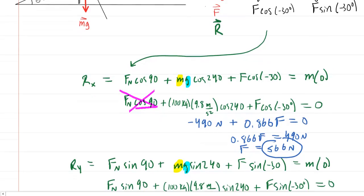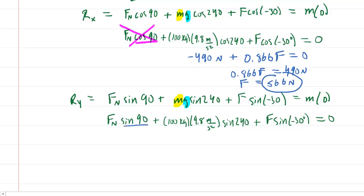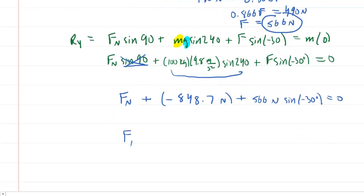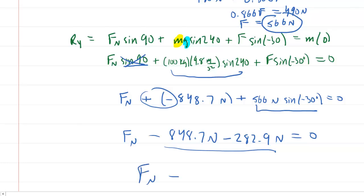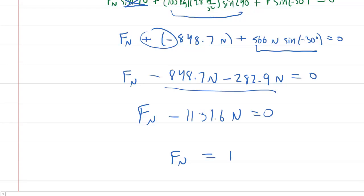We can use that result to find the normal force in part B. The sine of 90 is equal to 1. So you have Fn times 1, which is just Fn, plus, let's type in this quantity into our calculator. When you do so, you're going to get negative 848.7 Newtons plus F, which we just figured out was 566 Newtons, times the sine of negative 30. So now we have Fn. You're going to have minus 848.7 Newtons. Typing this into my calculator, I got minus 282.9 Newtons equals 0. Let's combine these like terms together. So you have Fn minus 1131.6 Newtons equals 0. Add the 1131.6 to the other side, and you will get, when you round, a final answer for the normal force of 1132 Newtons.